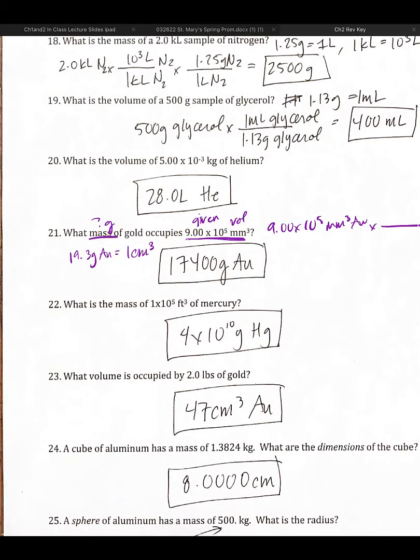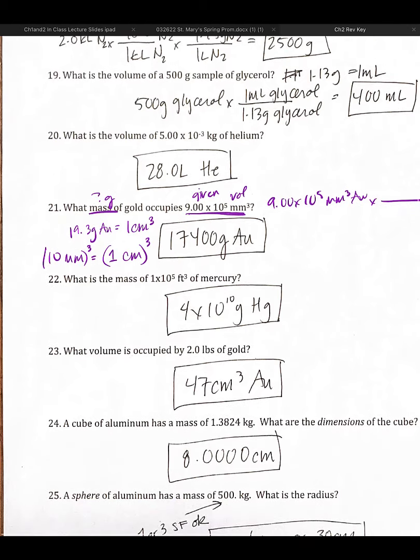Well, the density of gold is 19.3 grams of gold are equal to one centimeter cubed of gold, which means we've got to get these millimeters cubed to centimeters cubed. And so this goes back to what we've done a whole bunch at this point. We are going to write the one dimensional relationship between millimeters and centimeters. And there are 10 of these. And so now we need to turn it into a three dimensional relationship, which means we are going to cube the entire conversion factor.